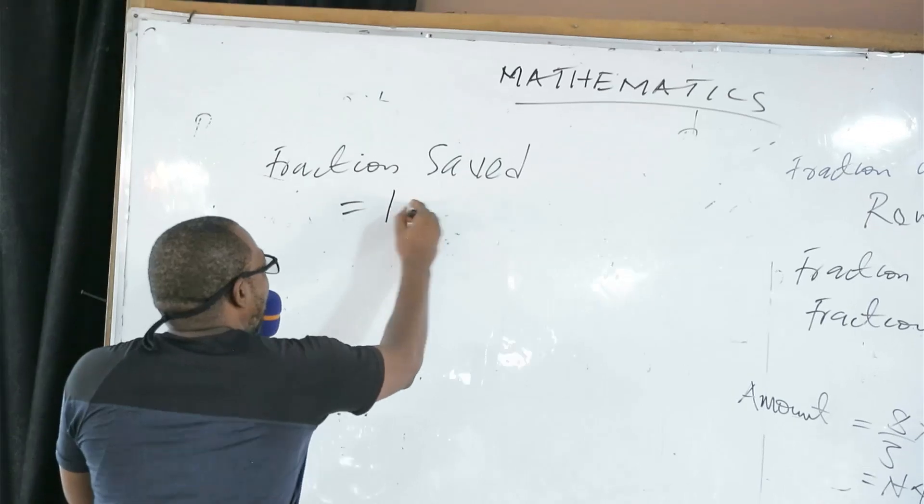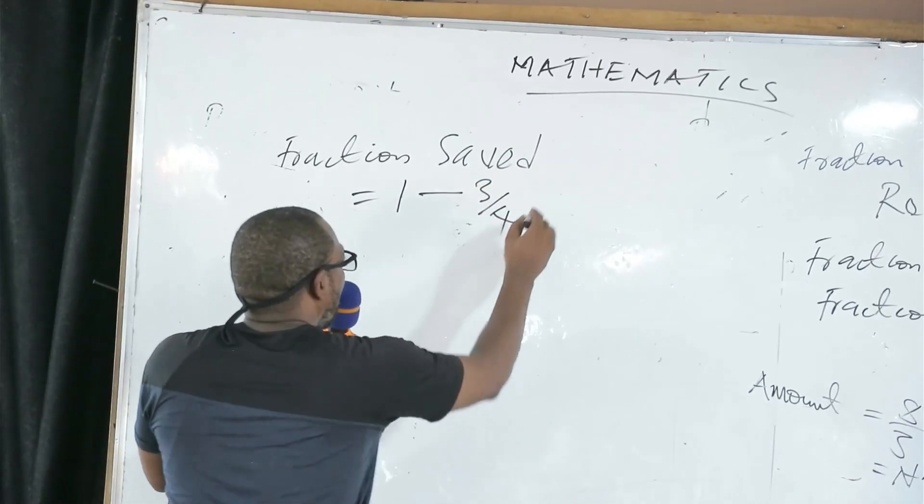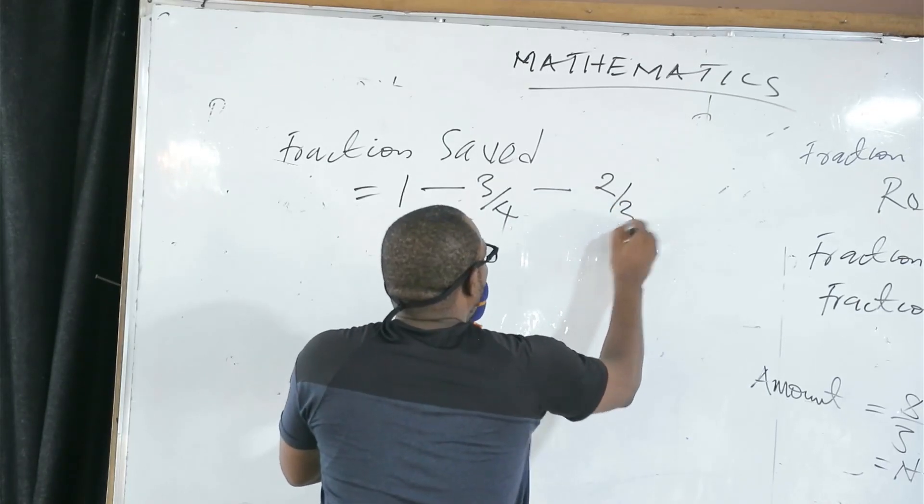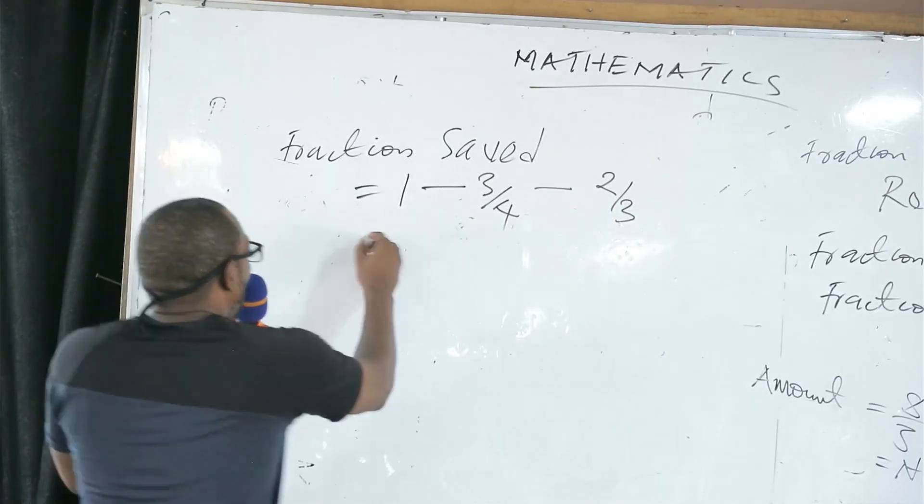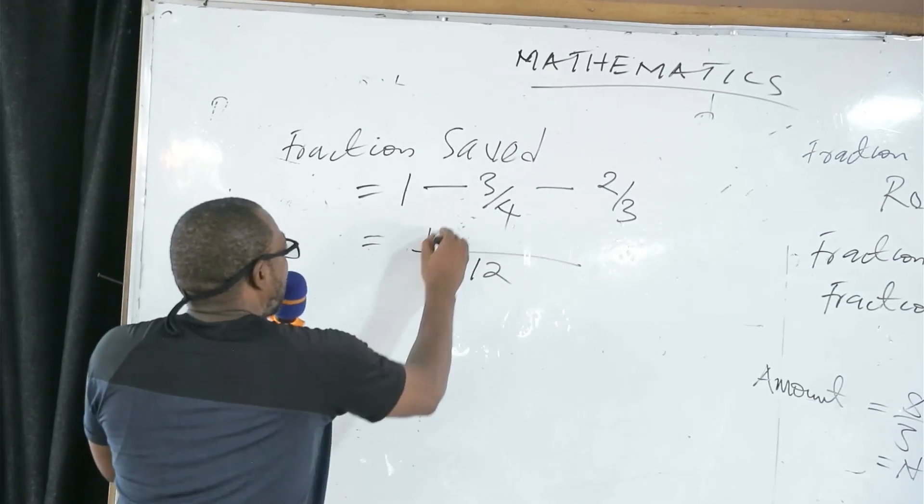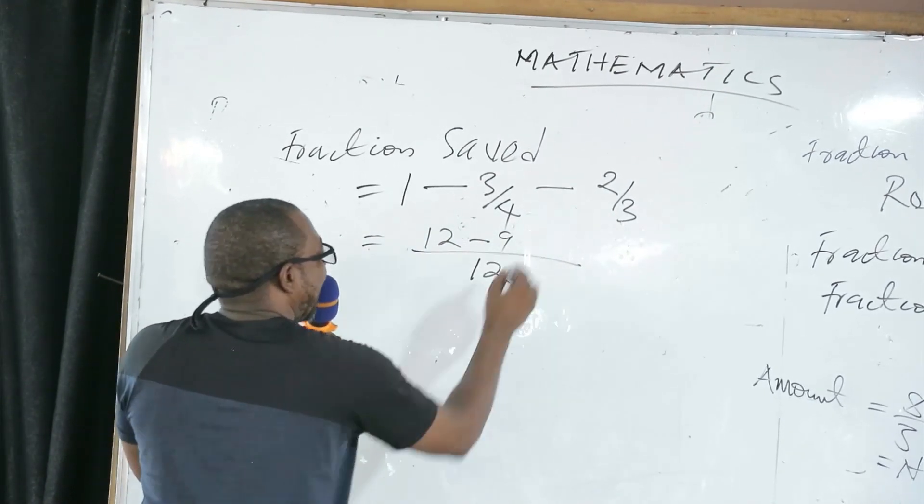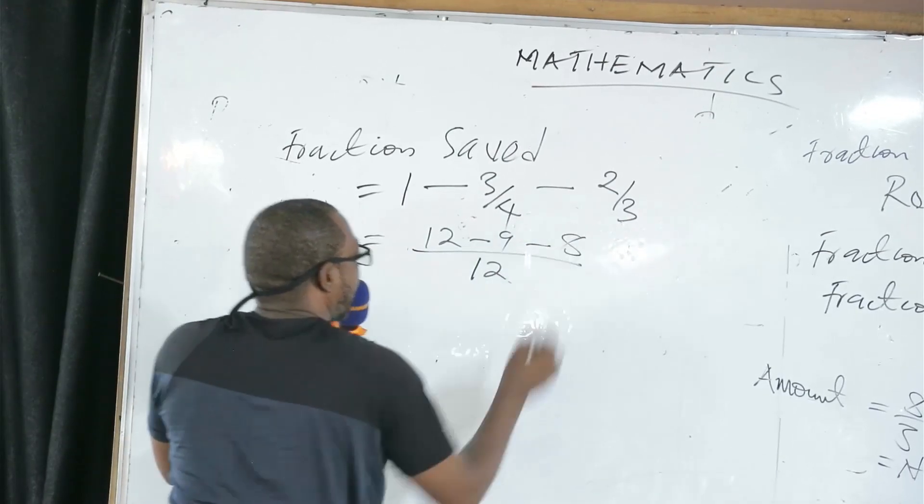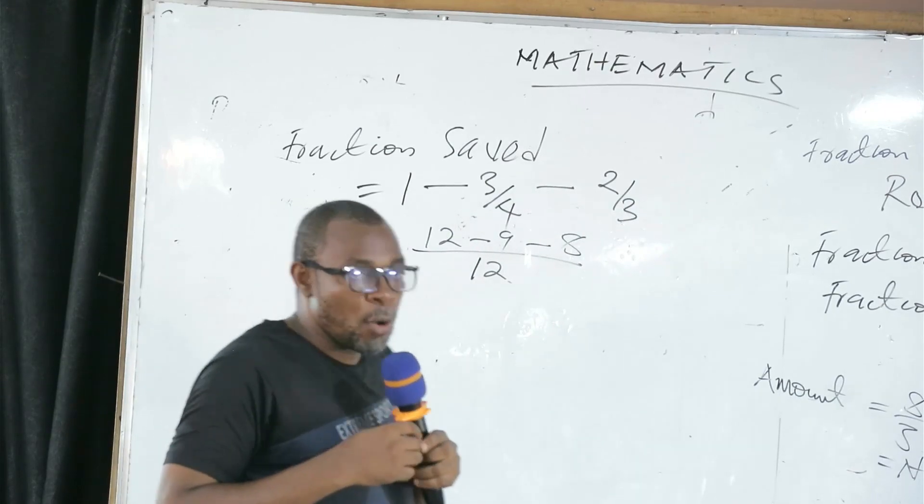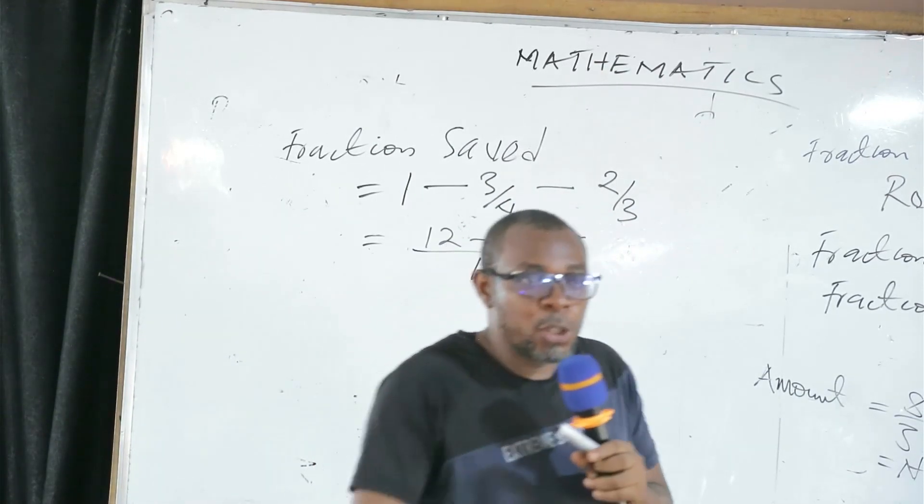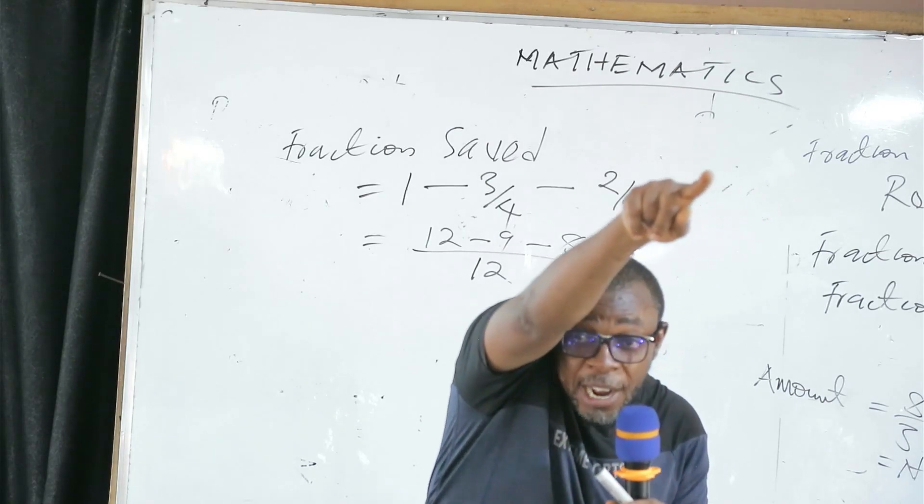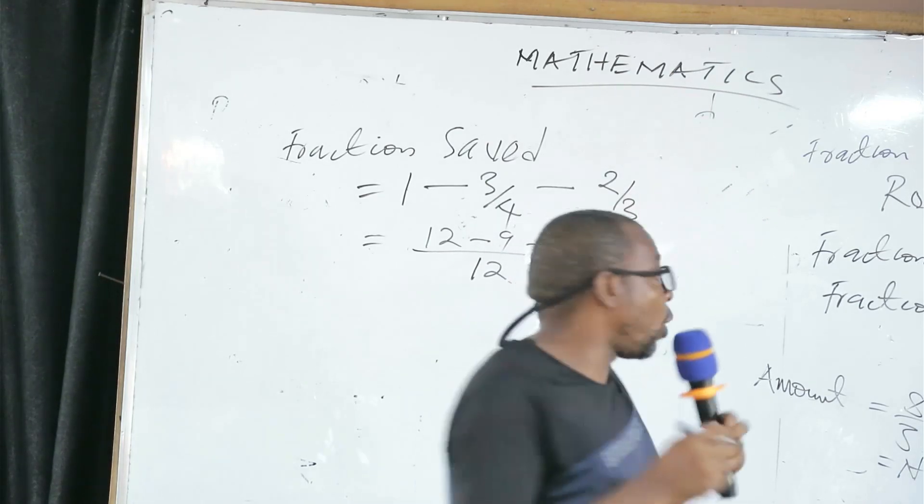Fraction saved from one. We remove what? This is 12 now. 12 minus 9. So it means there's a problem. So we go back to the 2 over 4 she gave to us.